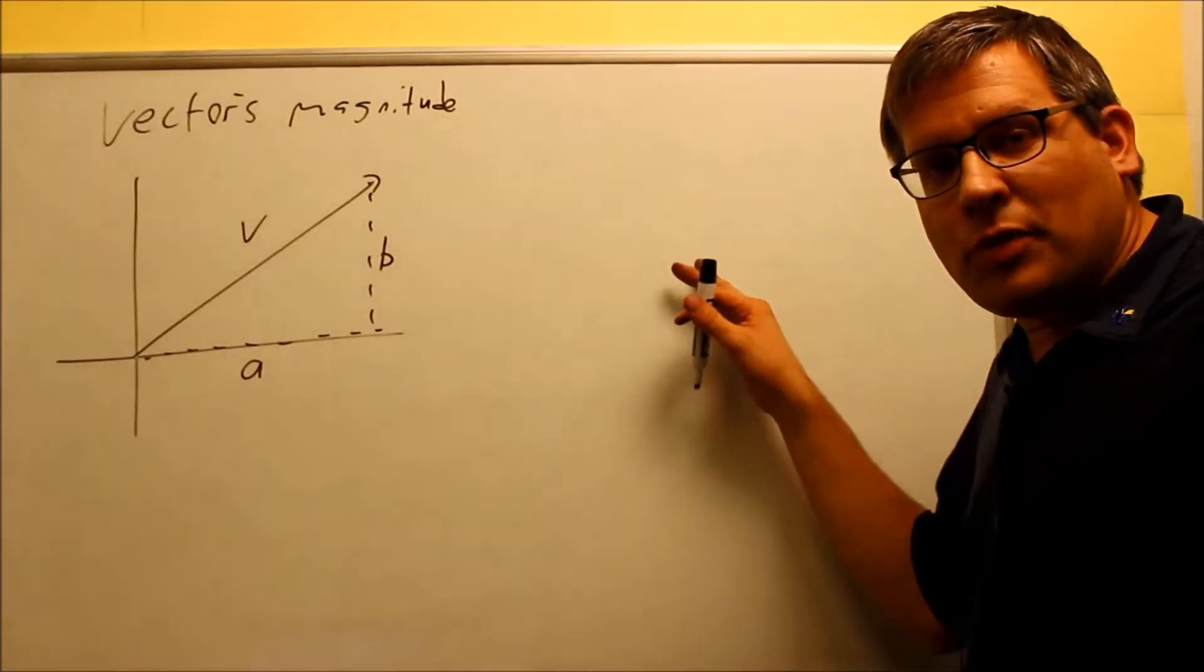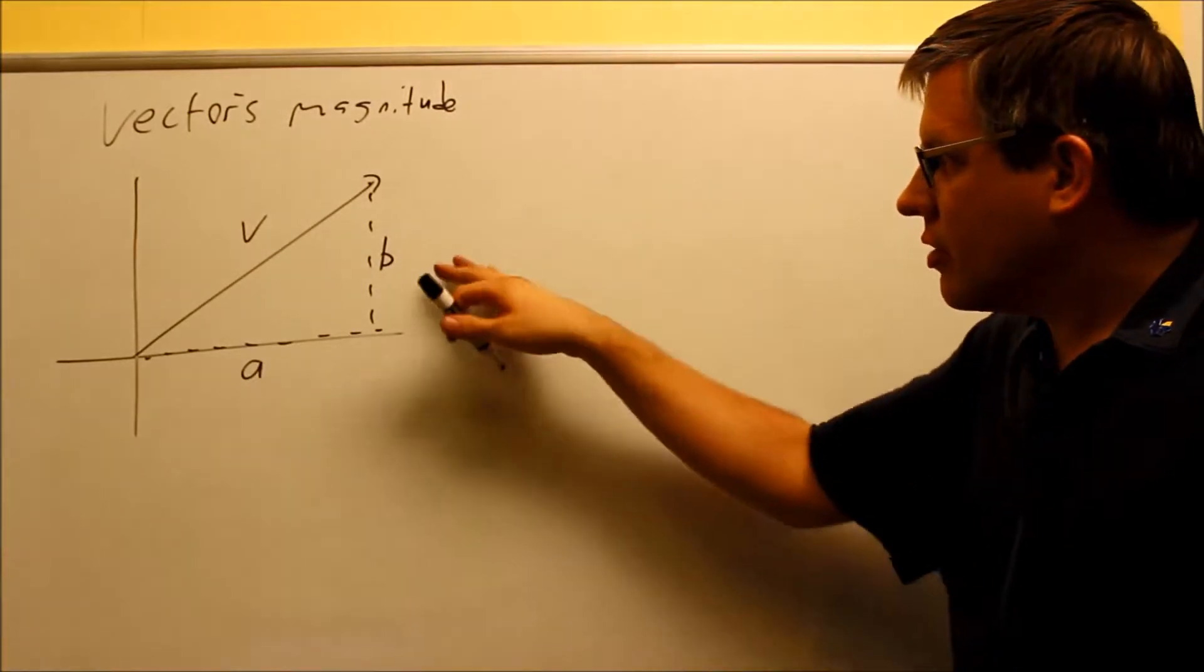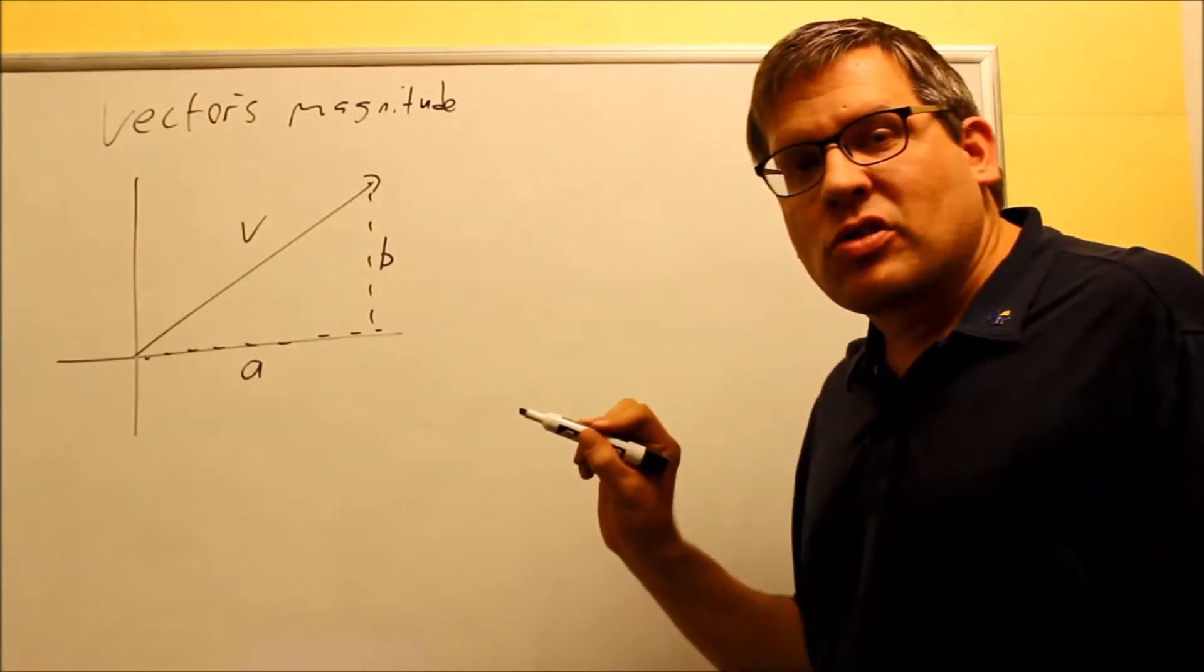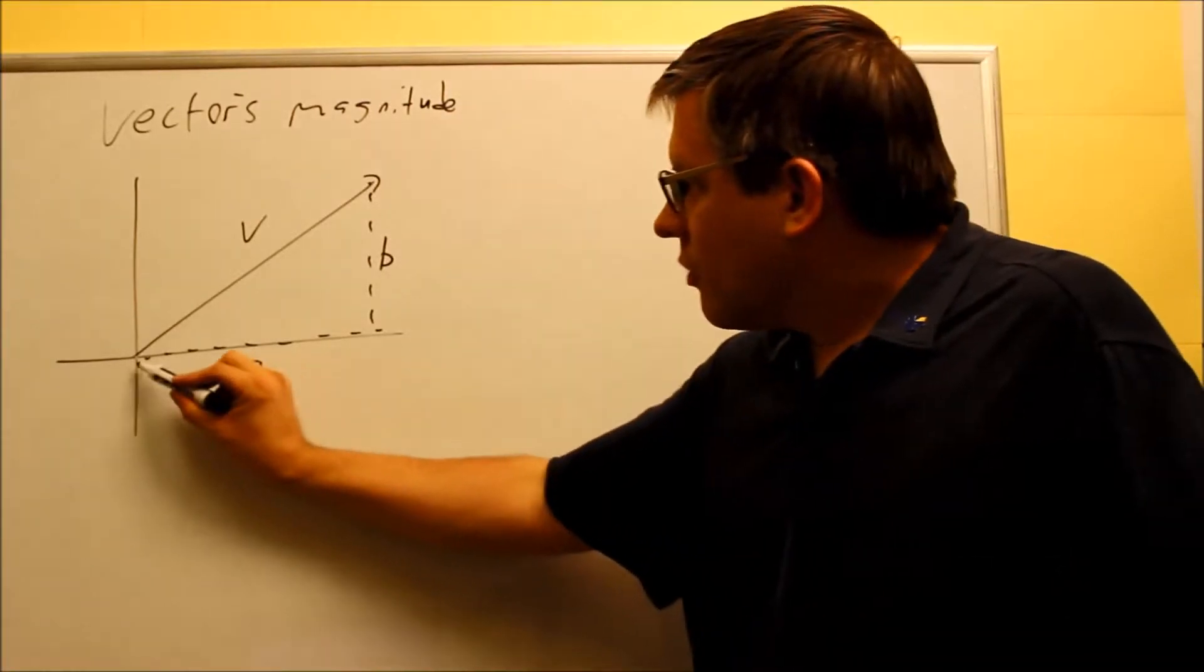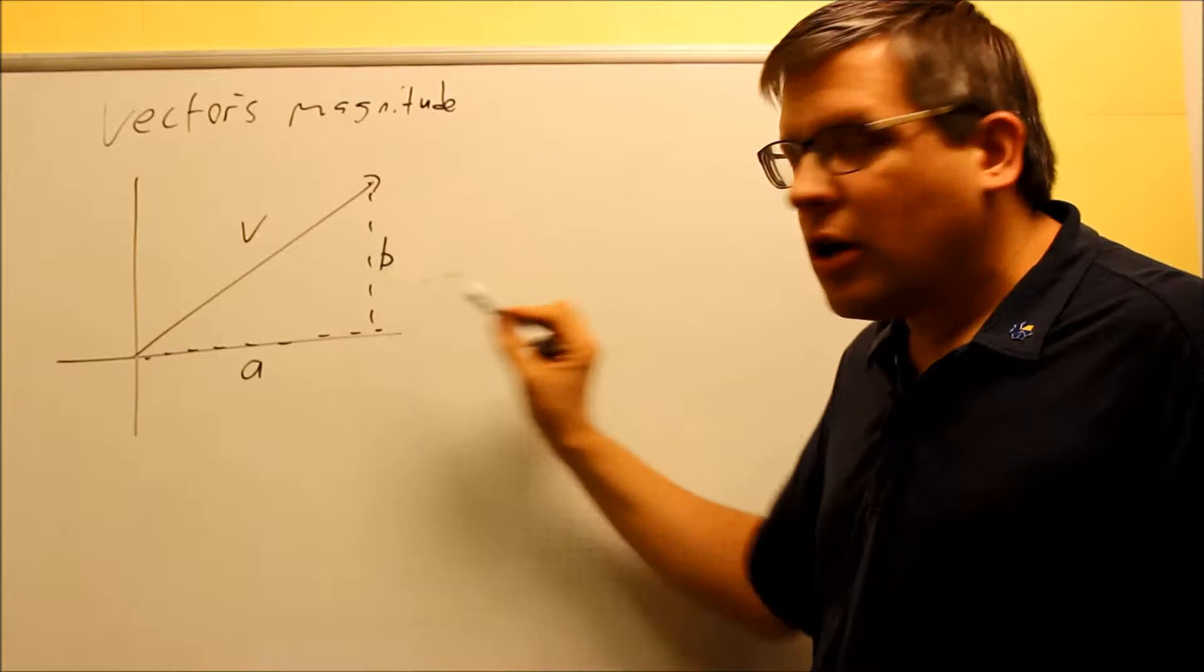Okay, now we want to find the vector's magnitude, or how long the vector actually is. Now, here is the drawing again. We're assuming that we have a position vector starting from (0, 0). We're going to go this way in the A direction, that's the horizontal direction, and we're going to go up B.